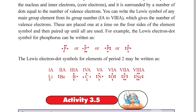For example, the electron dot symbol for phosphorus can be written as the symbol P. The valence electrons are counted: one, two, three, four, five.